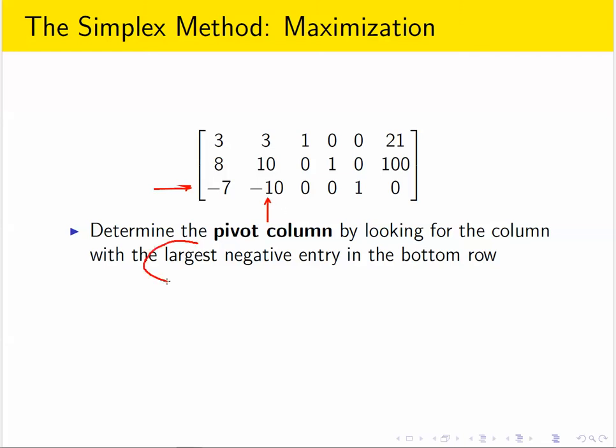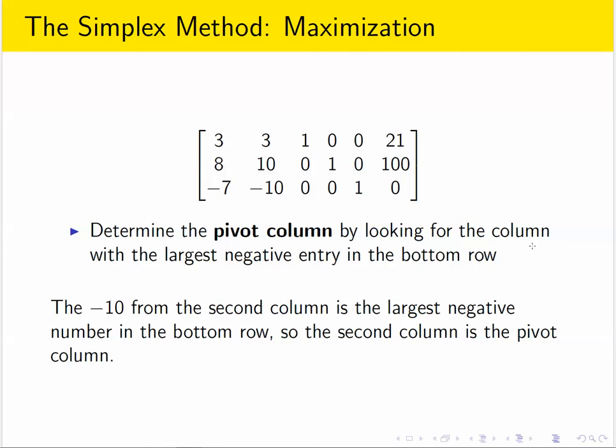So notice I'm using the word largest, not greatest. So we think of negative 10 as being a larger negative number than negative 7. So this second column is our pivot column.